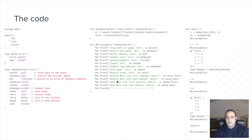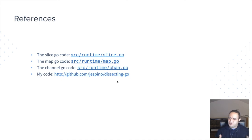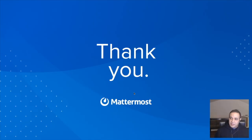This is the code. If you want to see it, here are some references. In the Go code, you have the runtime directory, and there you have the slice, map and chan files which have all these structures and a lot of information about how slices, maps and channels really work internally. If you want to see my code and play with it, you can find my dissecting-go repo on GitHub. And that's it. Thank you, everybody.